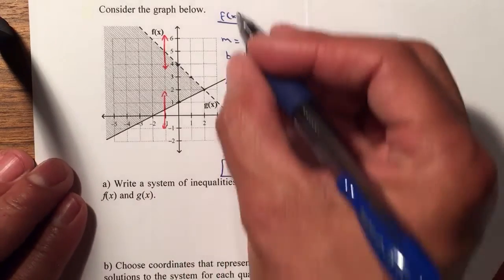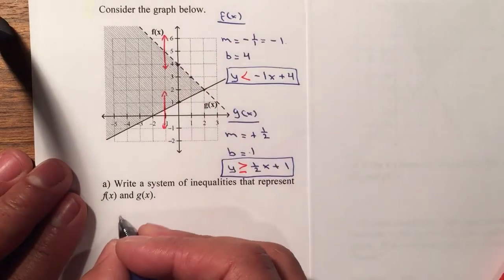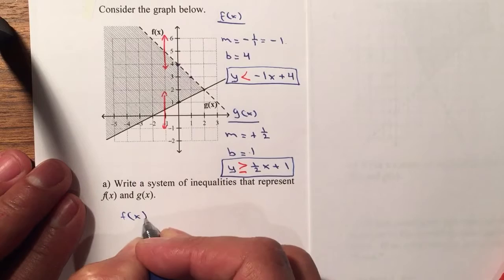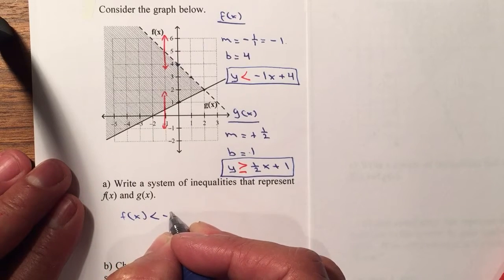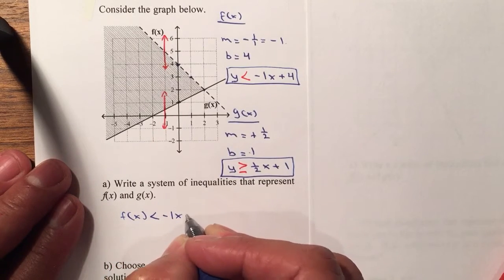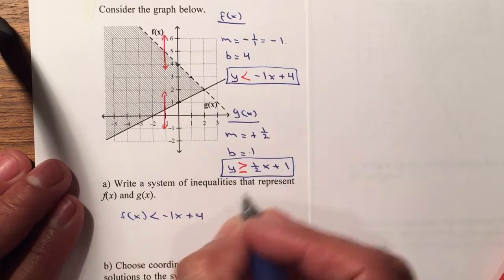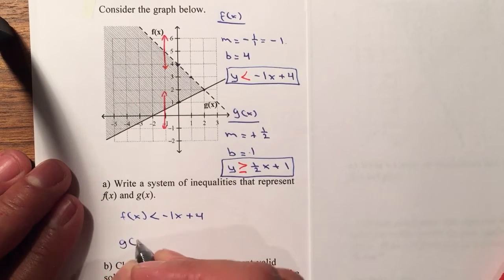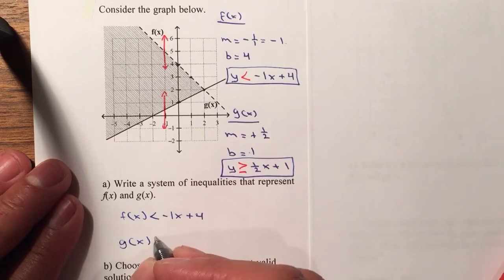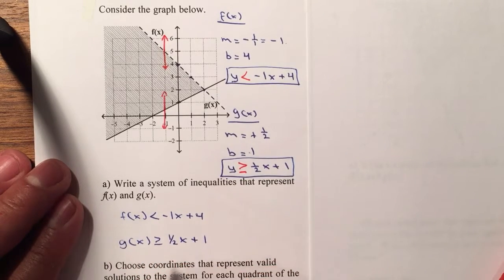So let's use the f of x name. Instead of y, it will be f of x is less than negative 1x, or just negative x, plus 4. And g of x is greater than or equal to 1 half x plus 1.